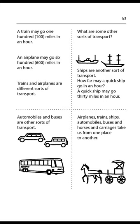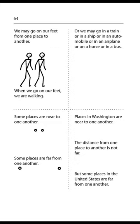Airplanes, trains, ships, automobiles, buses, and horses and carriages take us from one place to another. Page 64. We may go on our feet from one place to another. When we go on our feet, we are walking. Or we may go in a train, or in a ship, or in an automobile, or in an airplane, or on a horse, or in a bus.